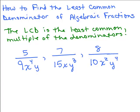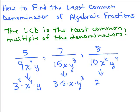One way of doing this is to write everything in prime factorization form, including the numbers, and also use exponents when necessary. So the first denominator becomes 3 squared x to the 4th times y. The second becomes 3 times 5 times x times y cubed. And the third becomes 2 times 5 times x squared times y to the 4th.